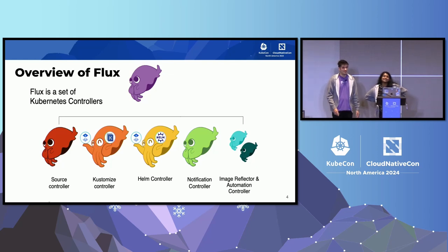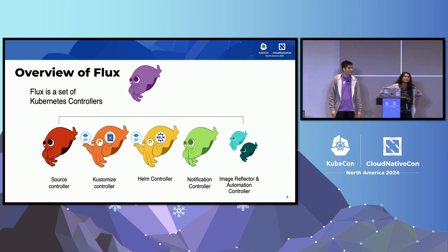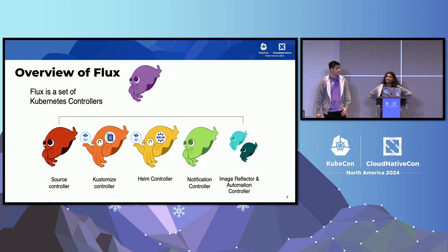You can do very GitOps-y stuff with this. You can update Helm values YAMLs, Docker Compose files, GitHub Actions, and even OCI volume sources for AI models in Kubernetes. Try it if you haven't.